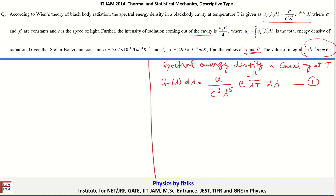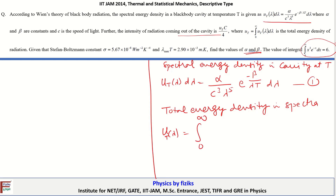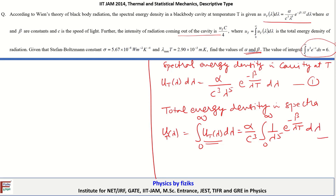From the spectral energy density expression, we calculate the total energy density by integrating: u_T = ∫₀^∞ u_T(λ) dλ = (α/c³) ∫₀^∞ (1/λ⁵) · exp(−β/λT) dλ. We call this equation 2.